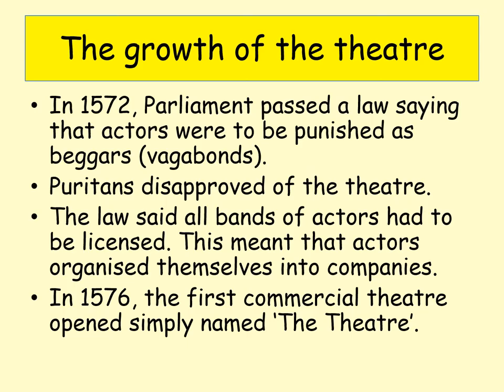So how did the theatre develop? Well, in 1558 there were no theatres in England. But in 1572, Parliament passed a law saying that actors were to be punished as though they were vagabonds or beggars. Puritans, who were strict Protestants, found the theatre really bad — they thought it was immoral and not conducive to a Christian lifestyle. This new law said all bands of actors had to be licensed, and what this actually meant is that actors did get themselves licensed and began to form their own theatre companies.